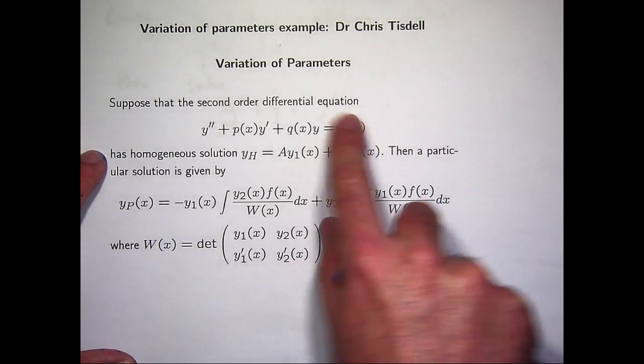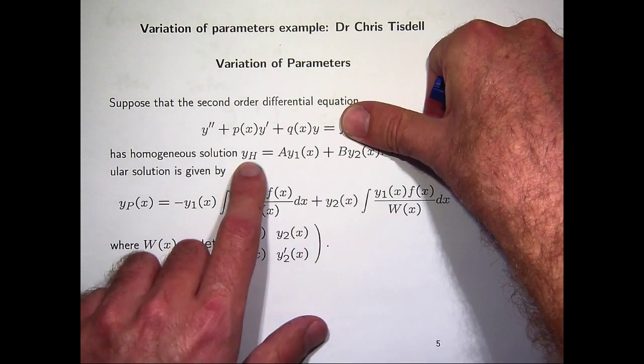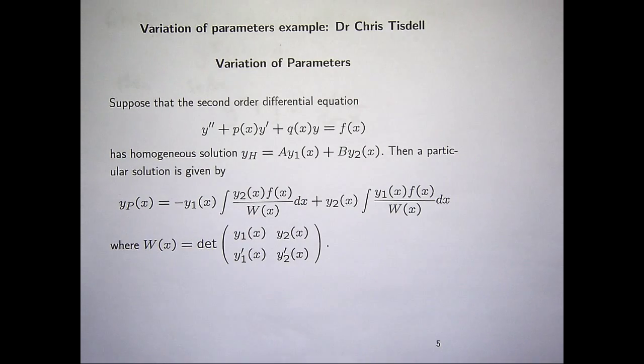Suppose when f equals 0, this problem has the so-called homogeneous solution, just a linear combination of two solutions, y1 and y2, that are linearly independent. A linear combination of two linearly independent solutions.